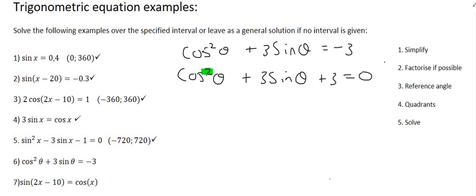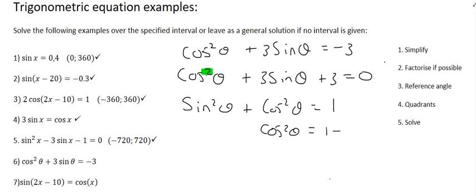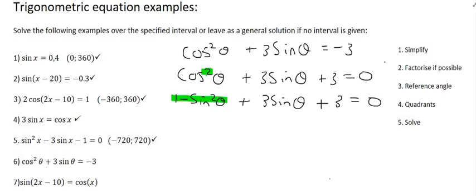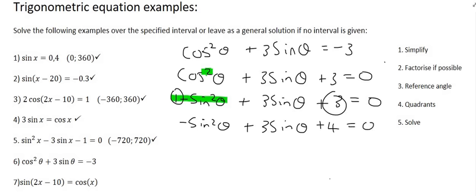The trick with this type of question is to use the identity sin squared theta plus cos squared theta equals 1. We rearrange to get cos squared theta equals 1 minus sin squared theta. We then substitute this into the original equation in place of cos squared theta, giving us 1 minus sin squared theta plus 3 sin theta equals minus 3. Simplifying gives minus sin squared theta plus 3 sin theta plus 4, and there we have a trinomial.